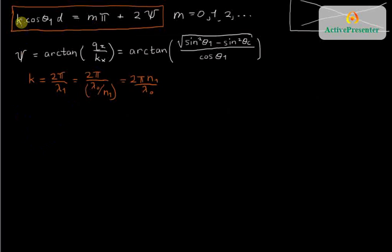So left-hand side, k cos θ1 d, we can now rewrite it as 2πn1. I'll take the d and ratio it to the lambda naught, since those are both lengths, the thickness of the cavity and the wavelength of the light in air. And then cos θ1.